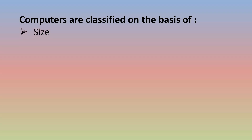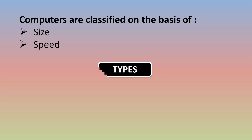First is size and second is speed. On the basis of these two factors there are total four types of computers.